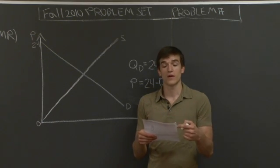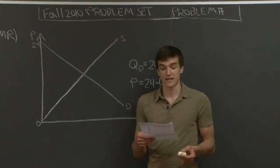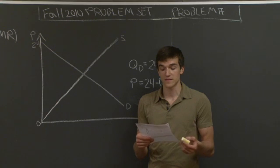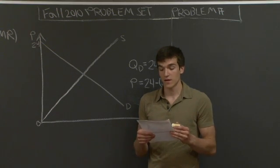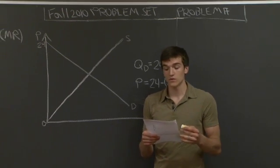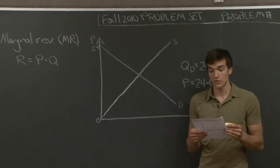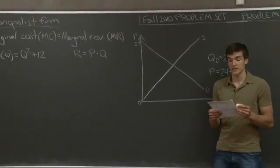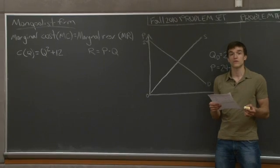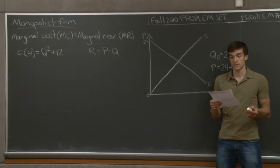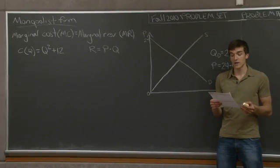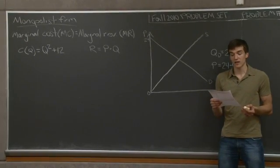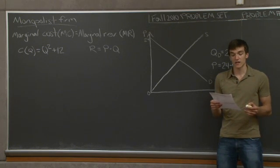Problem Number 4, Part A states: a monopolist firm faces the following cost curve — cost equals q squared plus 15, where q is the output produced. The demand for its product is given by p equals 24 minus q. We need to calculate the non-price discriminating consumer surplus, the producer surplus, and the deadweight loss associated with the monopoly.